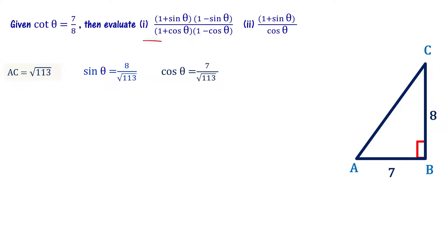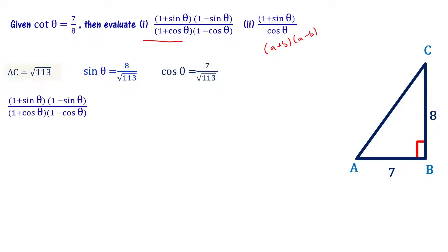Now we can evaluate the first expression: 1 plus sin theta times 1 minus sin theta divided by 1 plus cos theta times 1 minus cos theta. The numerator 1 plus sin theta times 1 minus sin theta uses the A plus B times A minus B formula, giving A square minus B square, which is 1 square minus sin square theta.